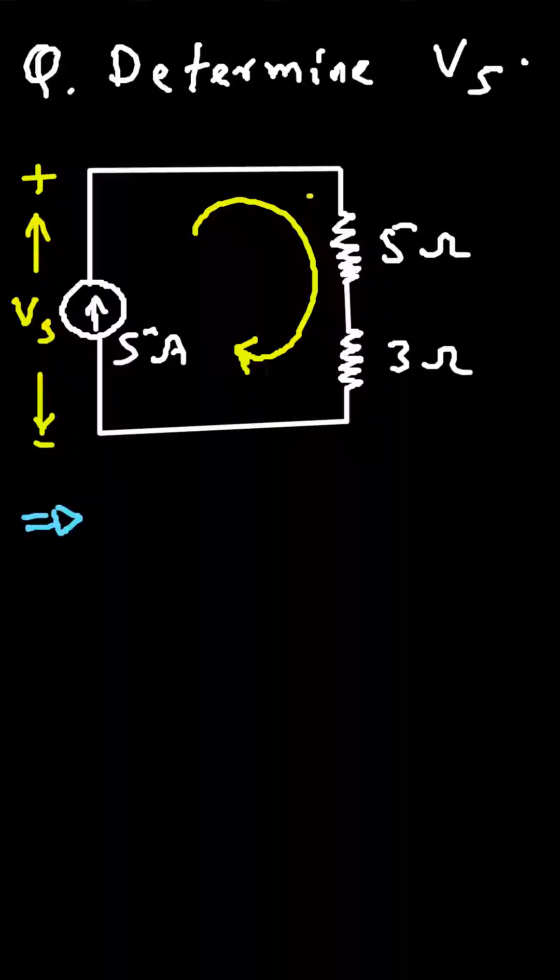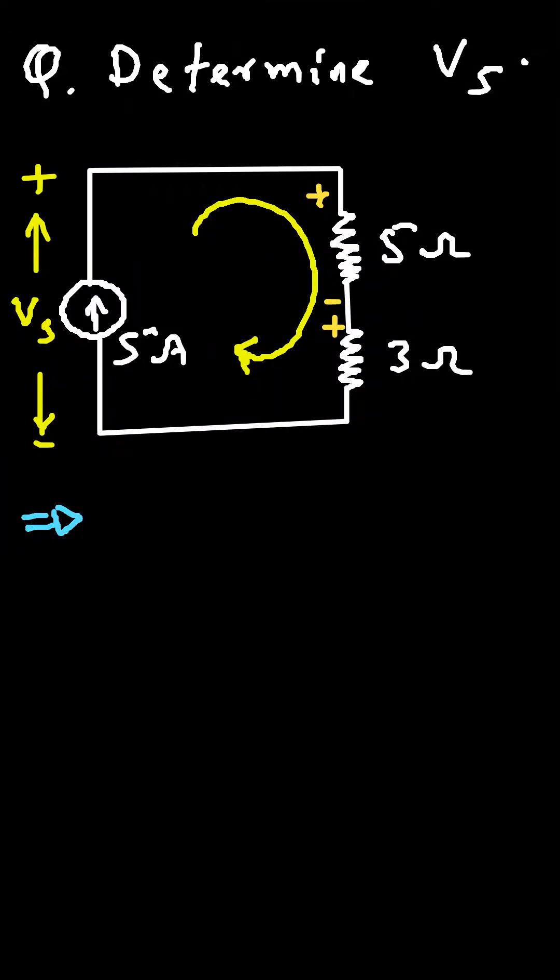In this video we will see an example on KVL, that is Kirchhoff's Voltage Law. So here we have to determine Vs, that is the voltage across this 5 ampere current source. First of all, according to the direction of this current, here this will be positive and this will be negative, and this will be positive here and negative here.